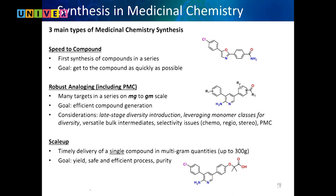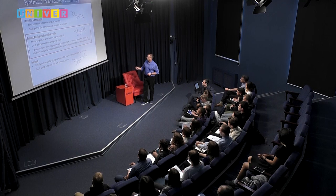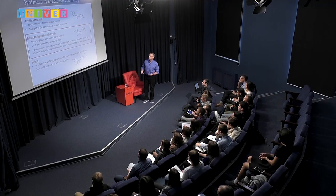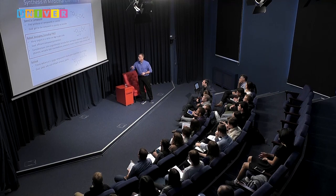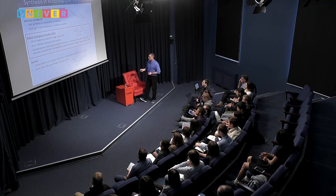The first compound we want to make as quickly as possible. The next is changing the core — trying many different things. We want to do our chemistry very quickly and efficiently; that's what PMC is. We use monomers for diversity and bulk intermediates. How do you know the order of reactions? These are things we have to figure out when doing fast, efficient parallel chemistry to make lots of analogs.